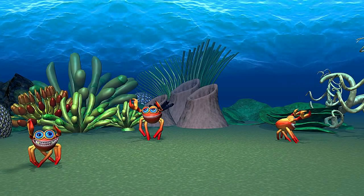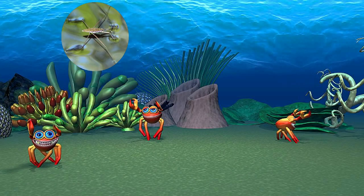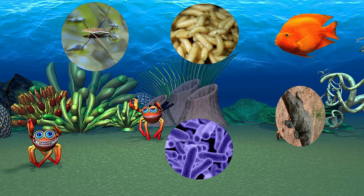Ecosystem: In the environment, when different components are interdependent and work together to fulfill each other's needs, they form an ecosystem. For example, in a pond, plants, insects, lava, fish, crocodile, and microbes live together. All of them are dependent on each other for food.